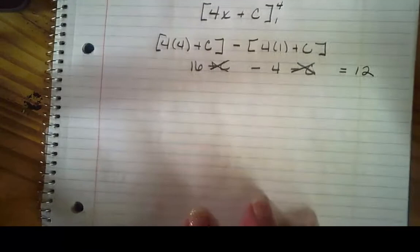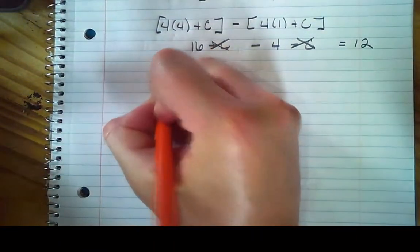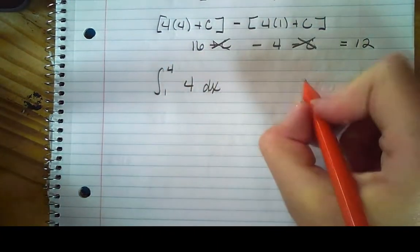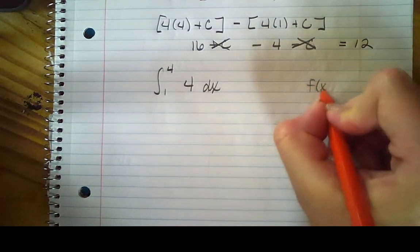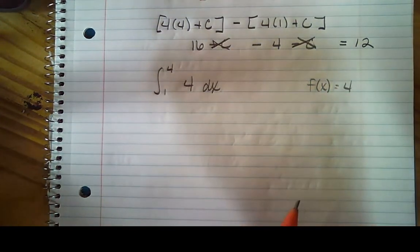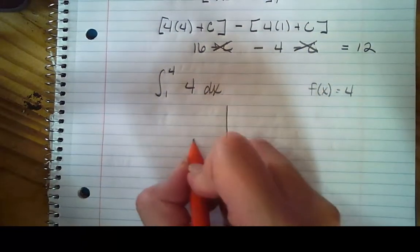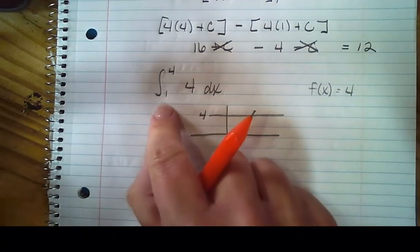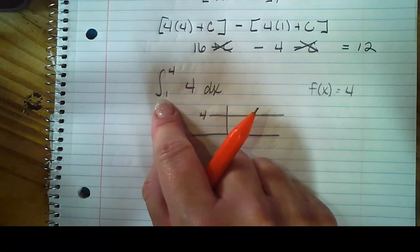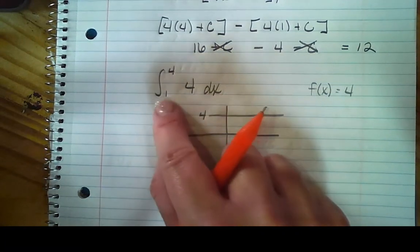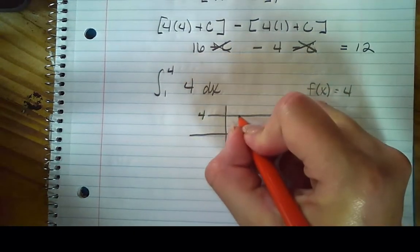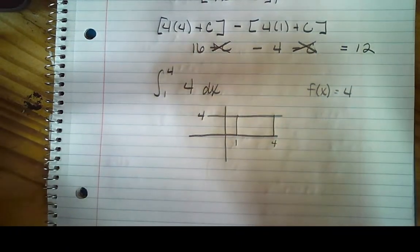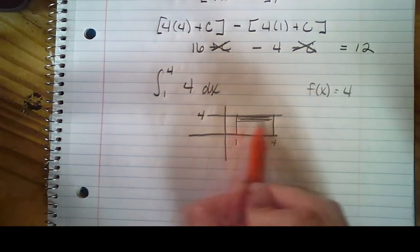So what does that mean in real life? We'll come back up here, and let's set up the problem again. We've got from 1 to 4 of 4 dx. So remember, this is your function. That is the same thing as f(x) = 4. So if I'm going to graph that, that's a horizontal line that slices through the y-axis at 4. And then I'm going to evaluate the area under the curve between the x values of 1 and 4. So here's an x value of 1, and here's an x value of 4. And then this is the area under the curve.